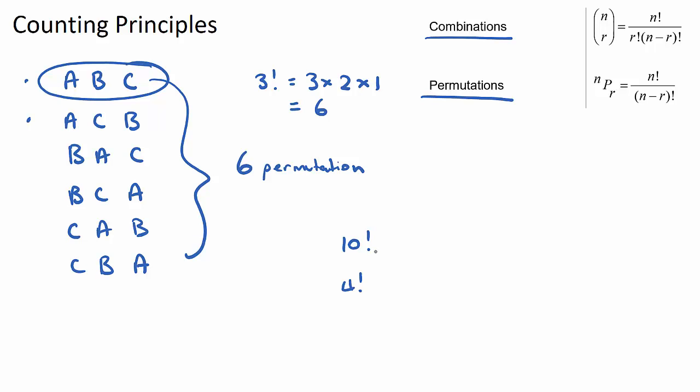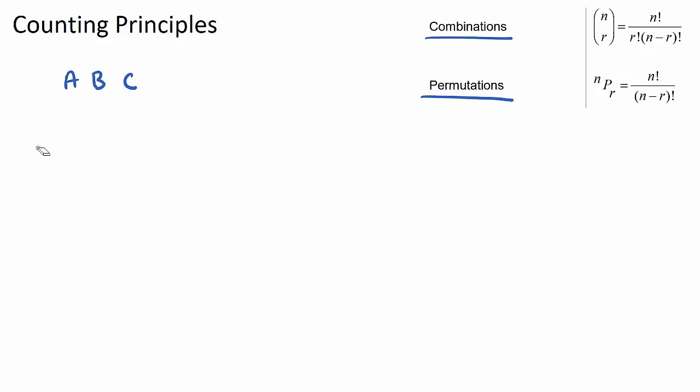Now what these questions then do is they get a little bit trickier because they might say okay well if I have, let's go back to my three original letters and I'm going to add another letter, the letter D and if the question said well how many ways could we write A, B, C, D but we only want to choose two of them. So we could choose A, B and then B, A and then A, C and then C, A.